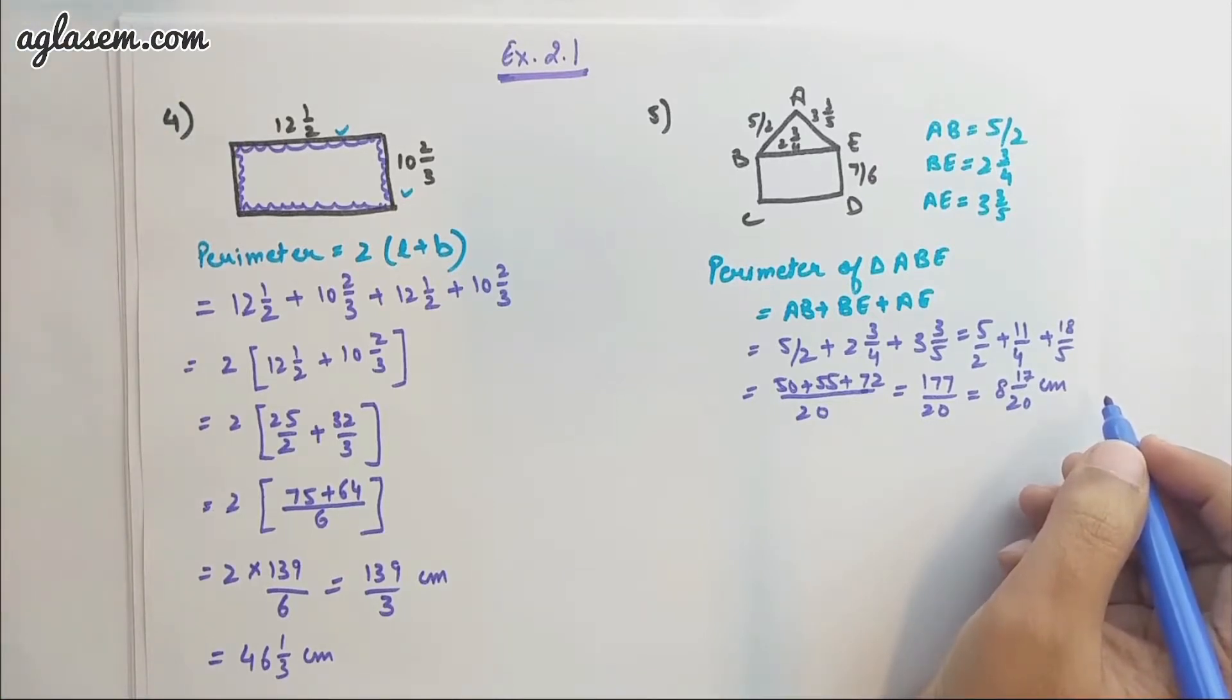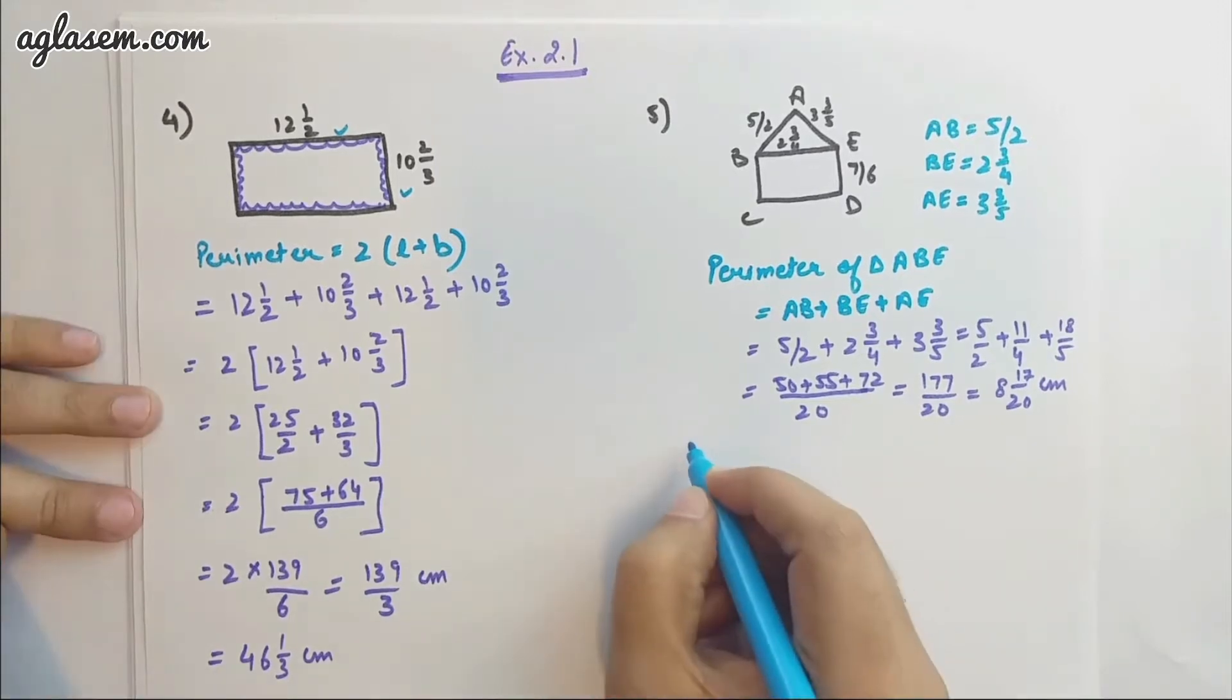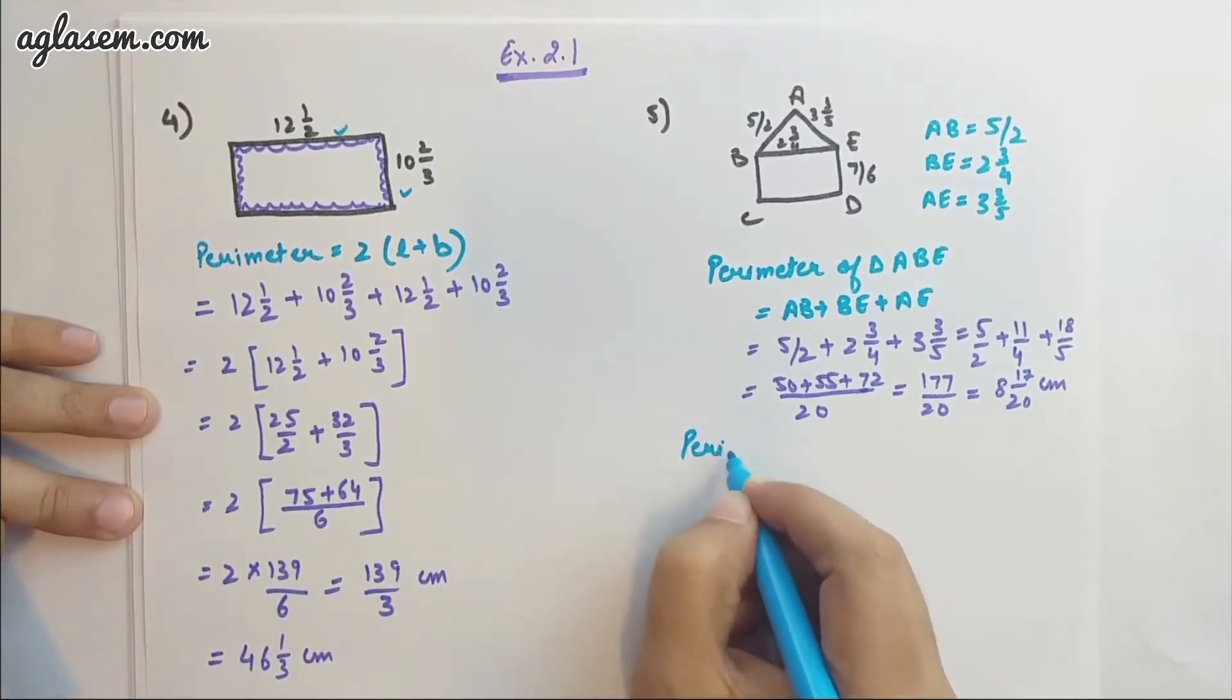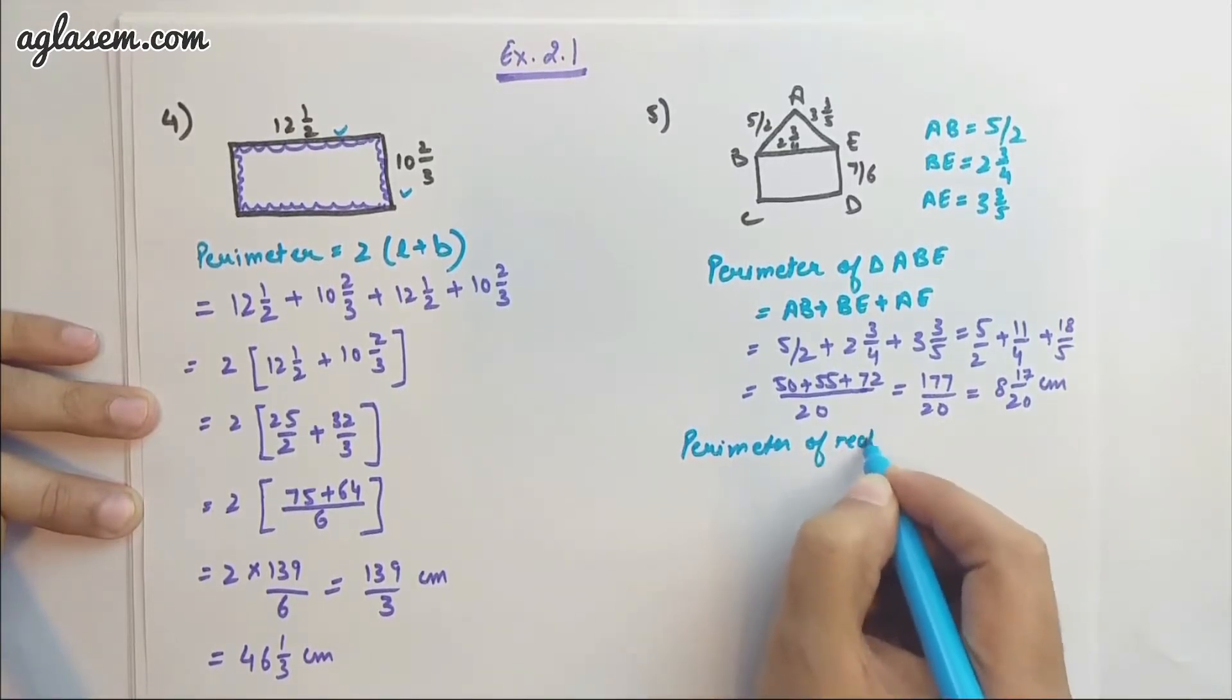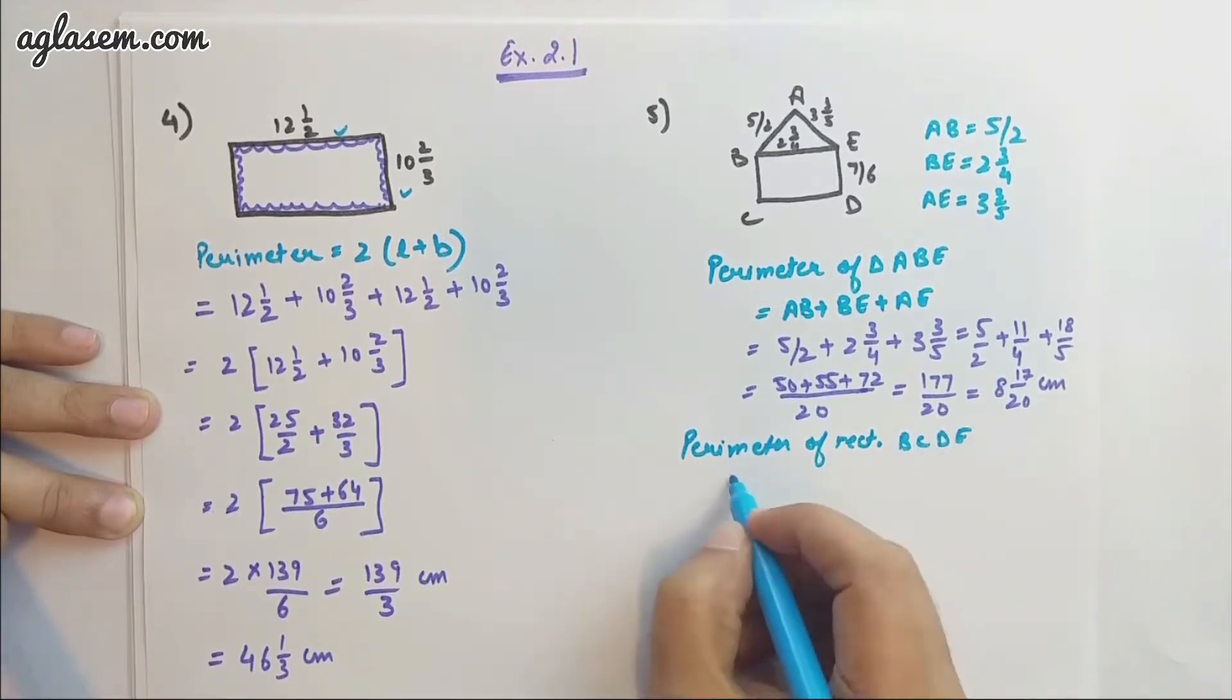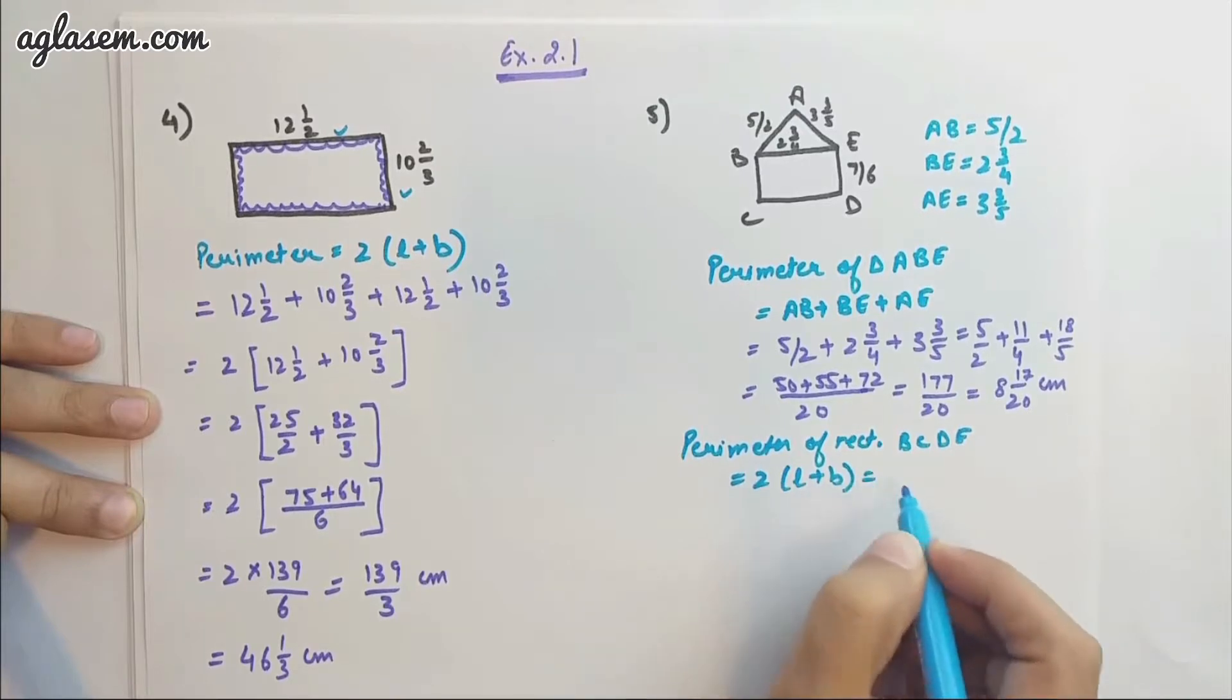Now the next part of this question - perimeter of rectangle. Since we already know the formula from the previous question, perimeter of the rectangle BCDE is 2(length + breadth).